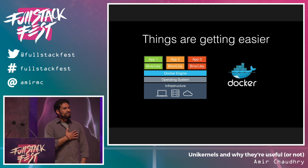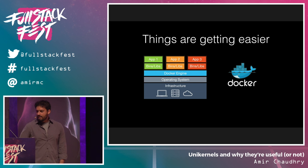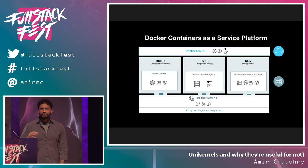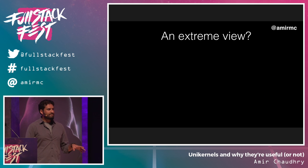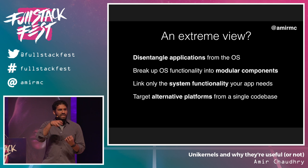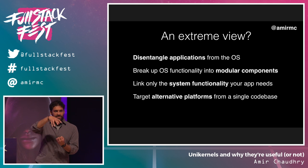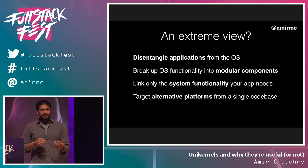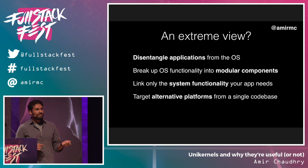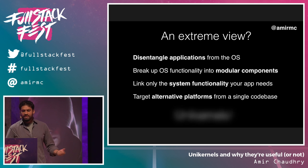But things are getting easier. I work at Docker. Docker has changed the unit of production — now containers are the things we try to deploy. They've also shipped a product called containers-as-a-service, a platform sitting between infrastructure-as-a-service and platform-as-a-service, giving you just the right amount of control and flexibility. But let's take an extreme view: what if we went right back to basics? We should disentangle applications from the underlying OS, break up those assumptions, break OS functionality into modular reusable components and separate libraries, then link only the system functionality your application actually needs — and ignore the rest.